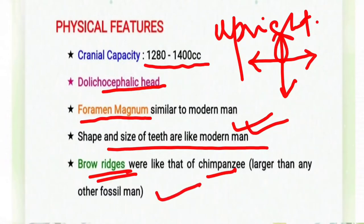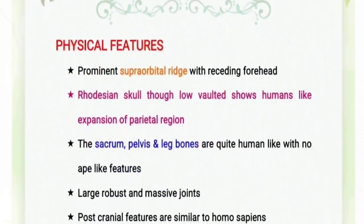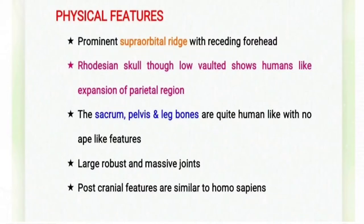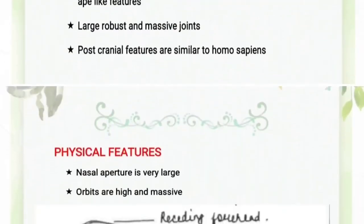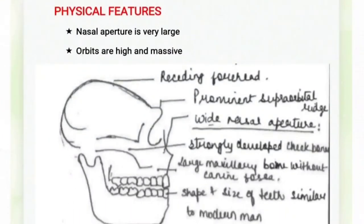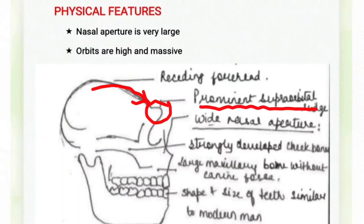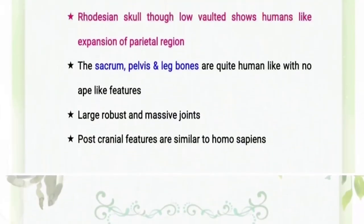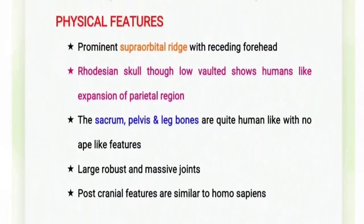Other features include a prominent supra-orbital ridge with a receding forehead. Looking at the diagram, this is the skull of the Rhodesian Man — you can see the receding forehead and the prominent supra-orbital ridge.